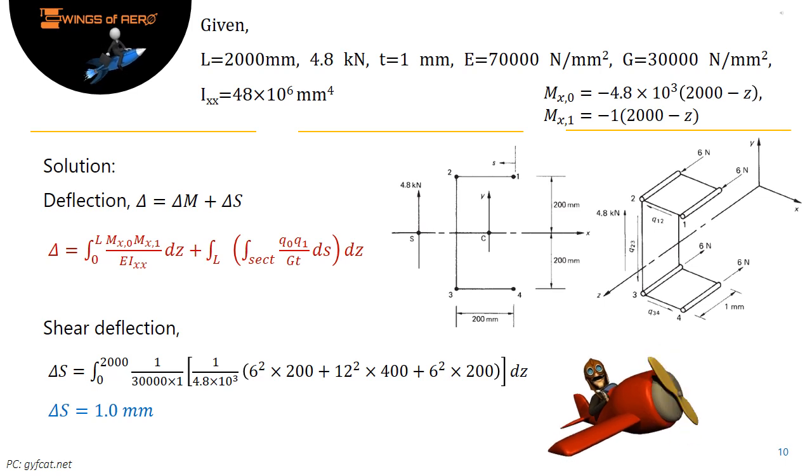Next, find the shear deflection. The shear flow distribution in the channel section produced by a vertical shear load of 4.8 kN acting through its shear center. We know shear modulus G and actual skin thickness t. Solve the term of shear deflection by substituting shear flow for sections 1, 2, 3, 4 as load into distance and simplify with the limit value of length of the cantilever 2000 mm. Thus the shear deflection is 1.0 mm.